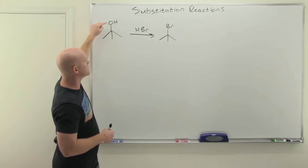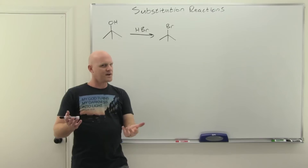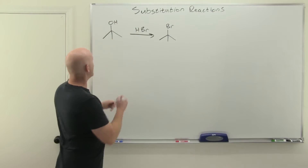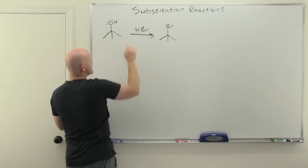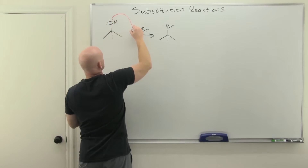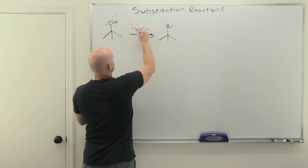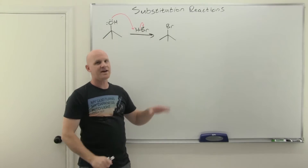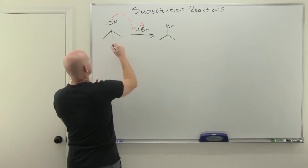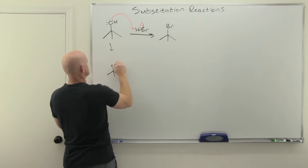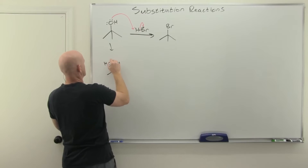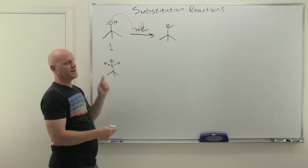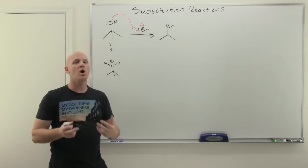The problem is, if a hydroxyl group were to leave, it would turn into hydroxide, which is a strong base and therefore not a good leaving group. So we use a strong acid like HBr. The first step is to protonate that hydroxyl group under strongly acidic conditions. Now instead of a hydroxyl group, we've got water sitting there, and water is a good leaving group because it's a weak base.